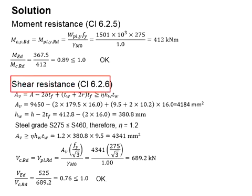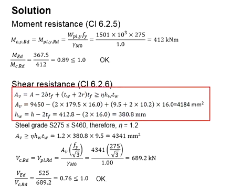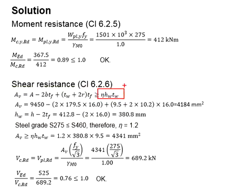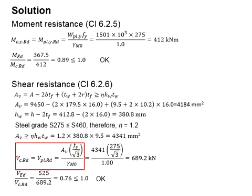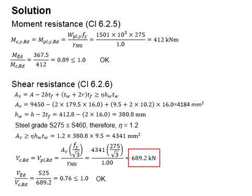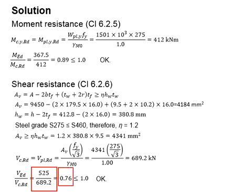Next, check the shear resistance per clause 6.2.6. Calculate the shear area and check it against the area of the web. In this case, the shear area is found to be less than the area of the web; therefore, 4341 mm² is used in the following calculation steps. The shear resistance is calculated by substituting the relevant values into the equation, giving 689.2 kilonewtons. Comparing the resistance to the load, the resistance is higher. Therefore, the shear check is acceptable.